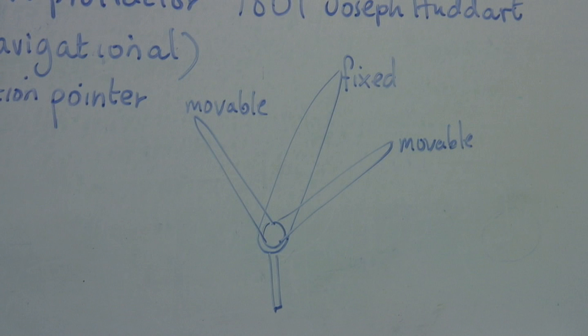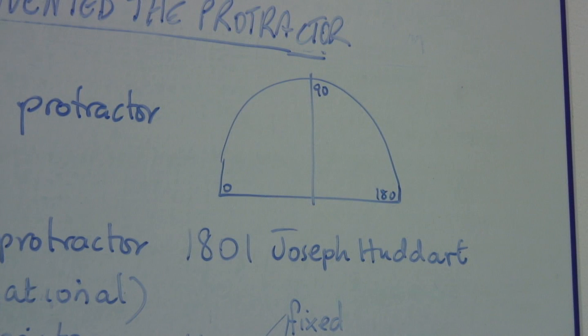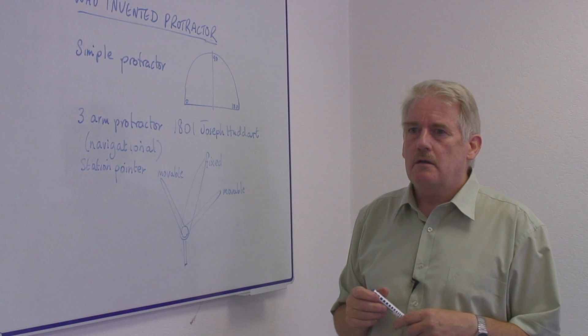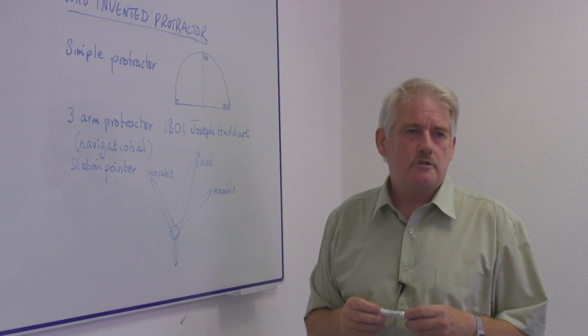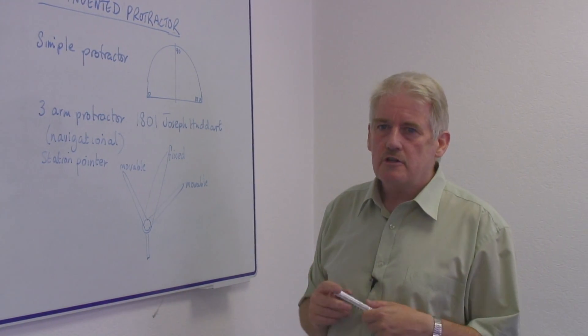The simple protractor consists of a semicircular piece of material marked with angles 0 to 180 degrees. This device has been seen in trigonometry throughout the ages so that obviously it has to be at least 4,000 years old and its origin is obscure.